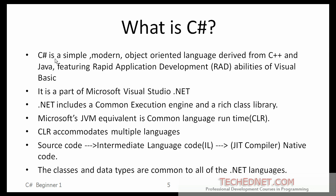So, what is C#? C# is a simple, modern, object-oriented language derived from C++ and Java. It is more like Java than like C++. It allows you to quickly develop applications using rapid application development technologies. It is a part of Microsoft Visual Studio .NET. The .NET includes a common execution engine and rich class library. Microsoft's JVM equivalent is the Common Language Runtime, also called CLR.